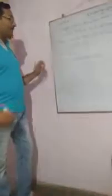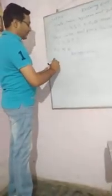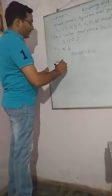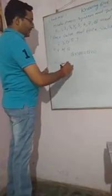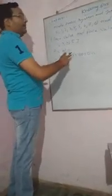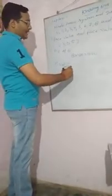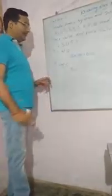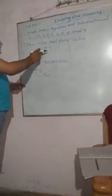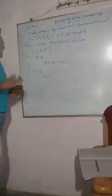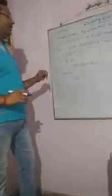Like that, if I ask the place value of 5, then what is the position of the 5? Tens place. So 5 into 10 equals 50. Similarly, we can find the place value of 3. What is the position of the 3? It stands in thousands. That means 3000, place value of 3000.